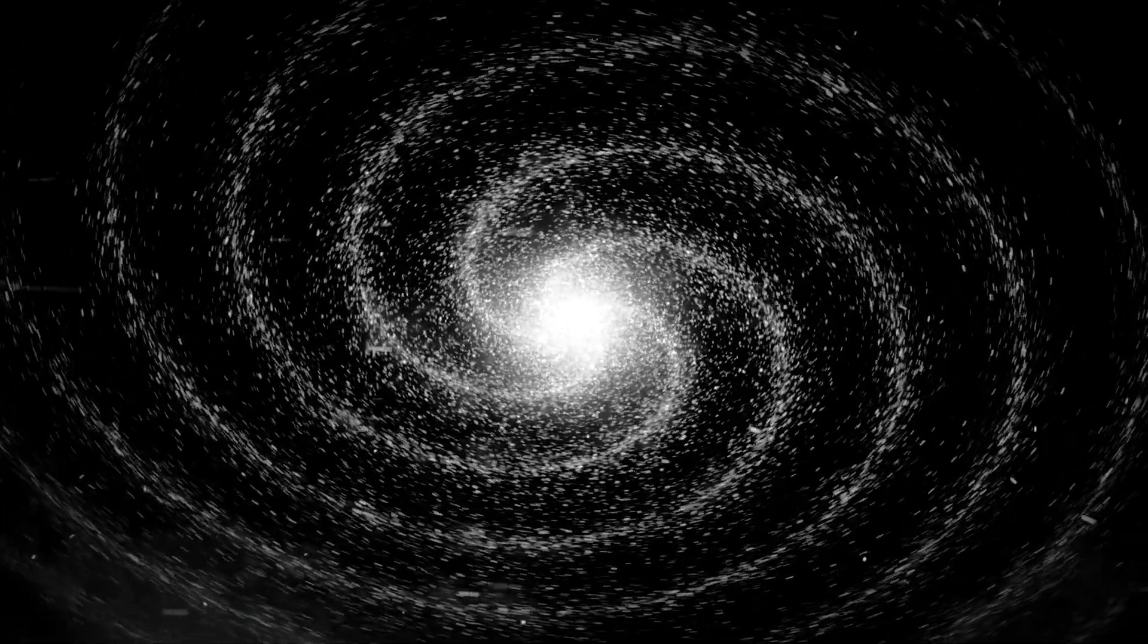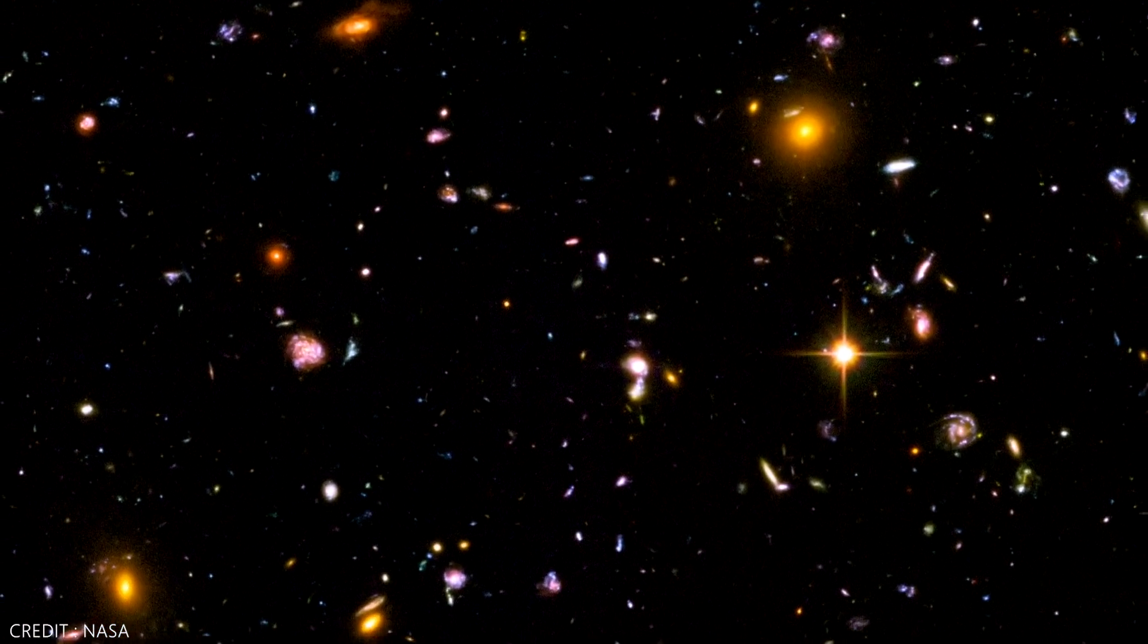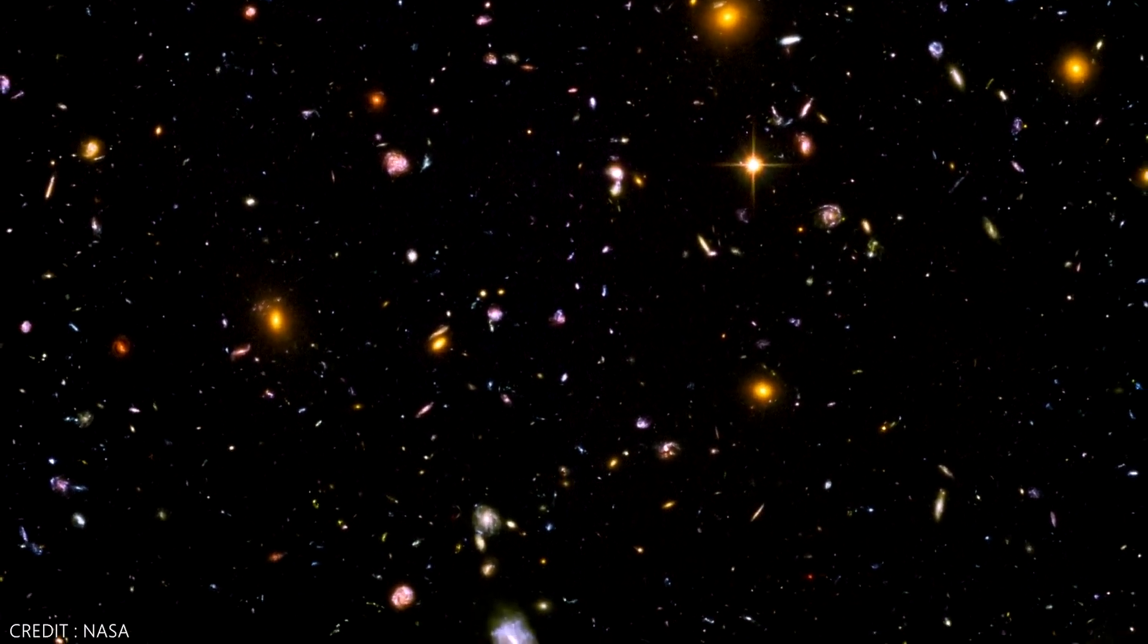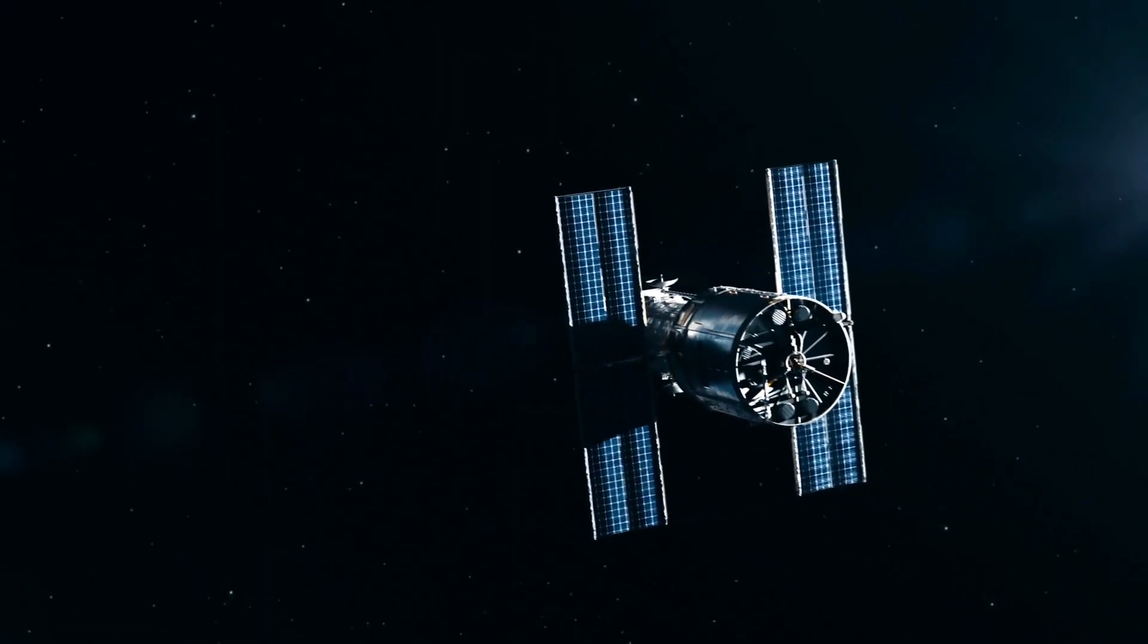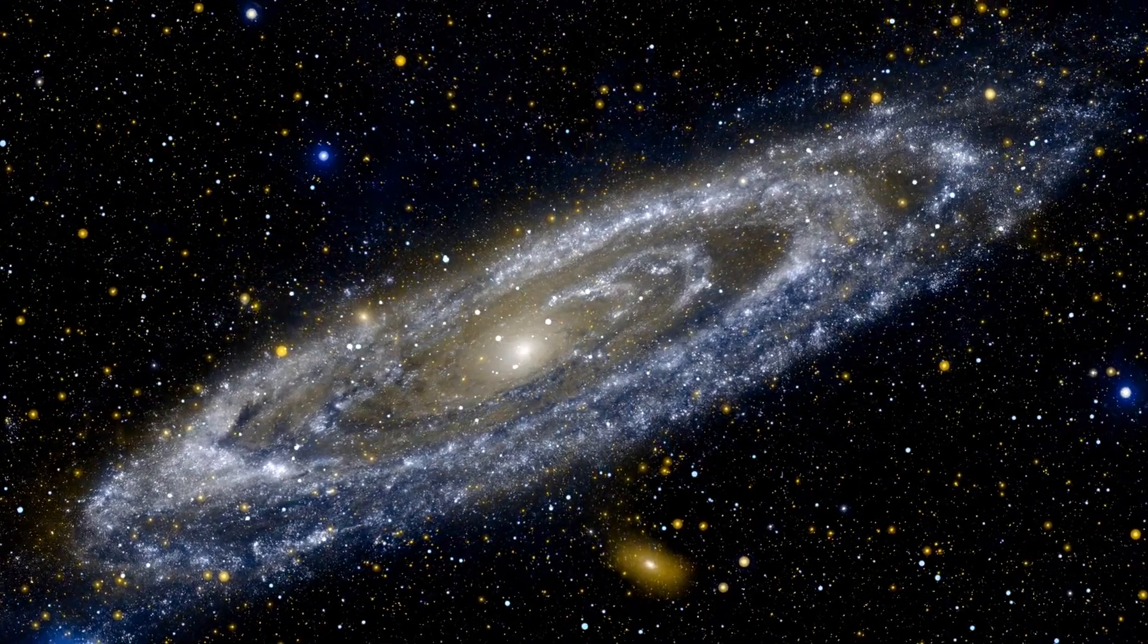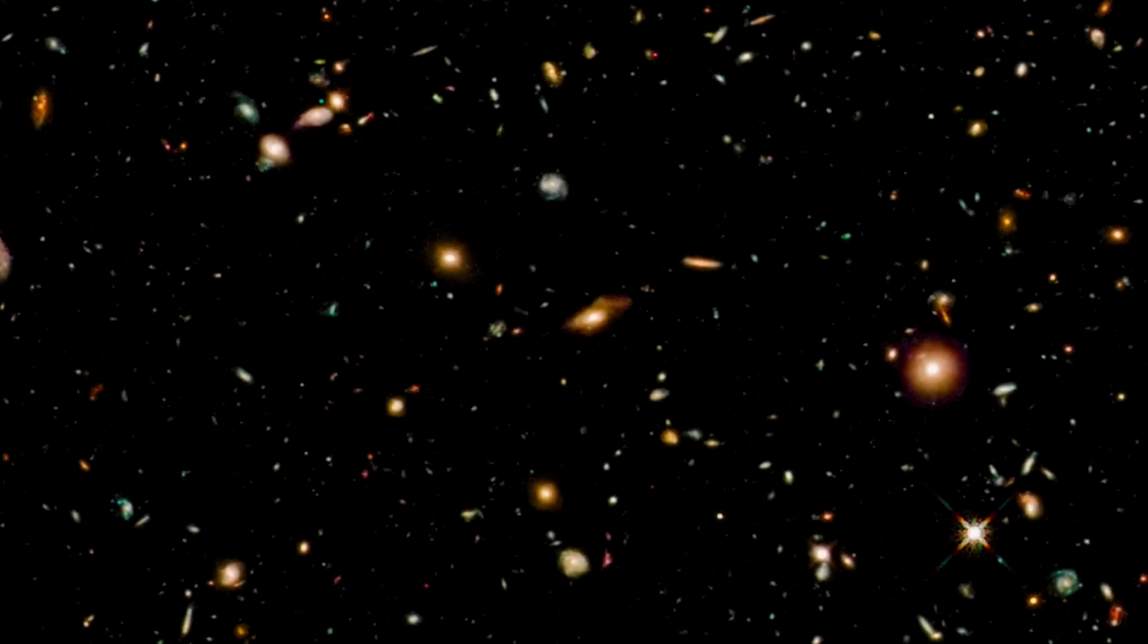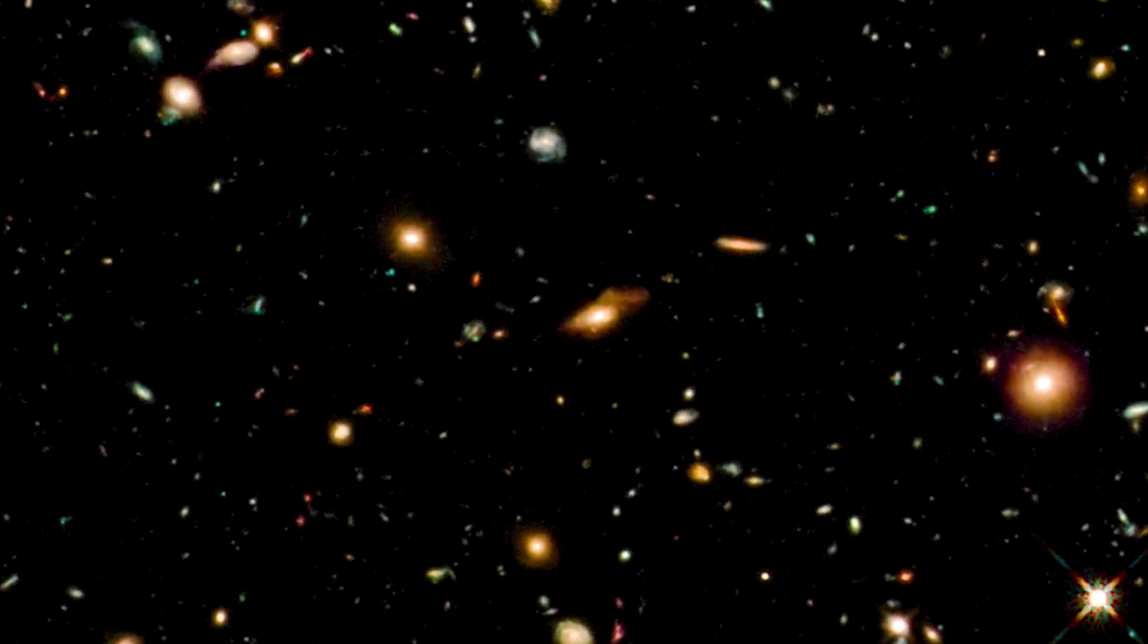Astronomers used to believe that a specific galactic structure signaled the end of a galaxy's formative years, suggesting it would only be found in older, fully matured galaxies, perhaps those halfway through the universe's evolution. Early observations with the Hubble Space Telescope led scientists to think that barred galaxies were rare in the early universe. However, our understanding of the early universe is undergoing a significant shift.